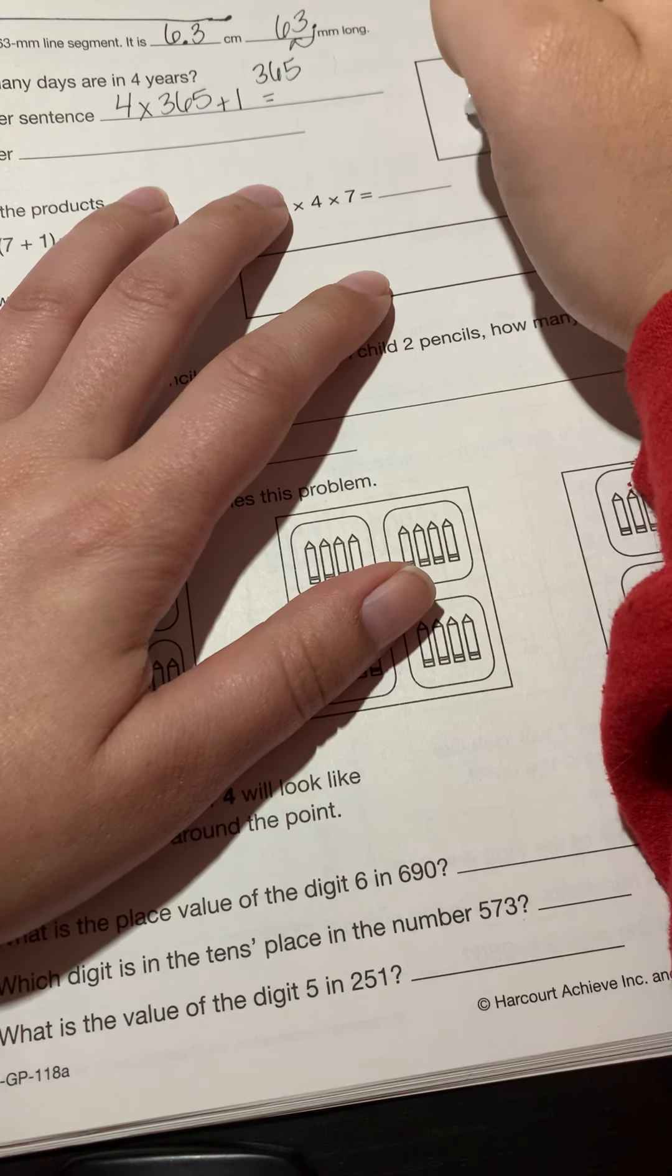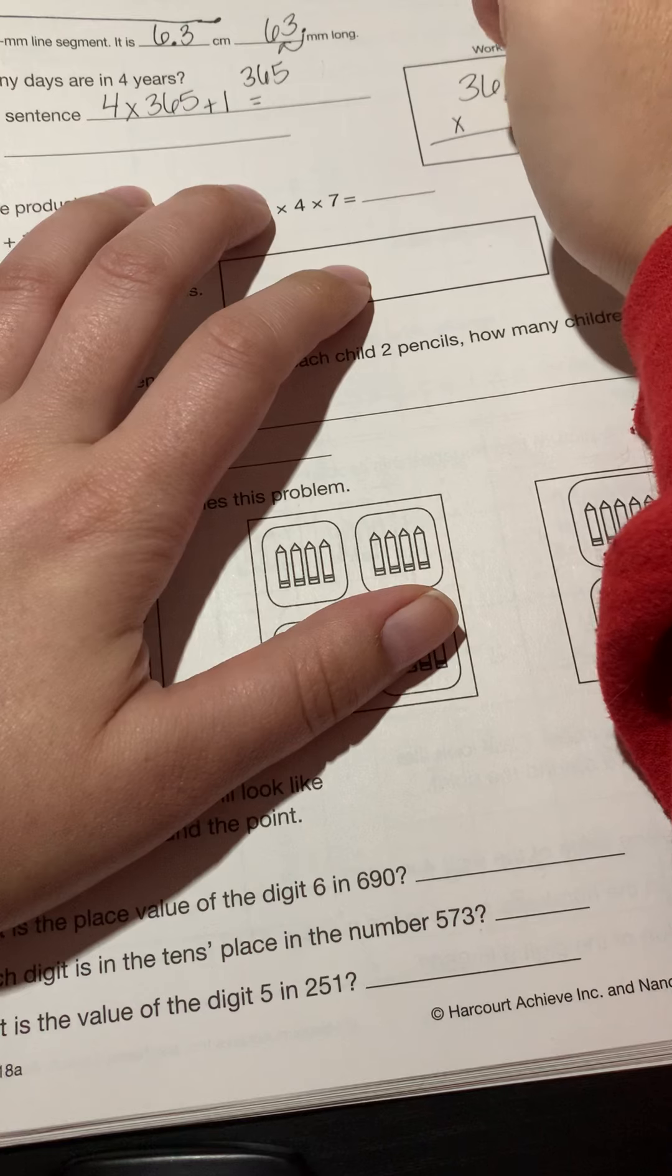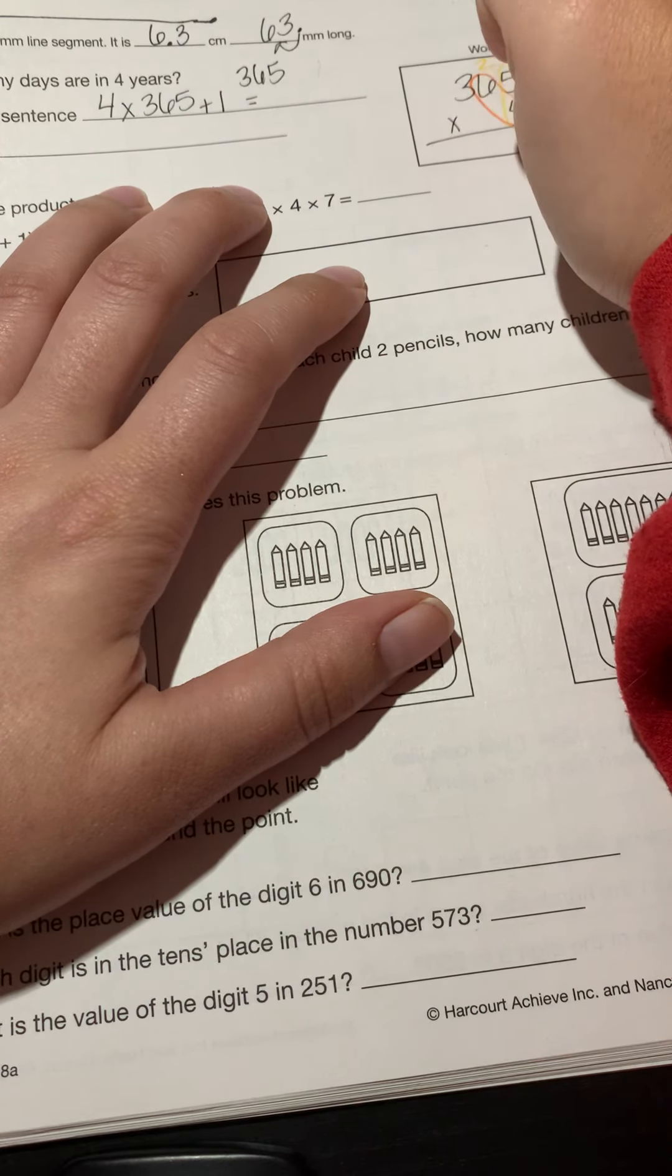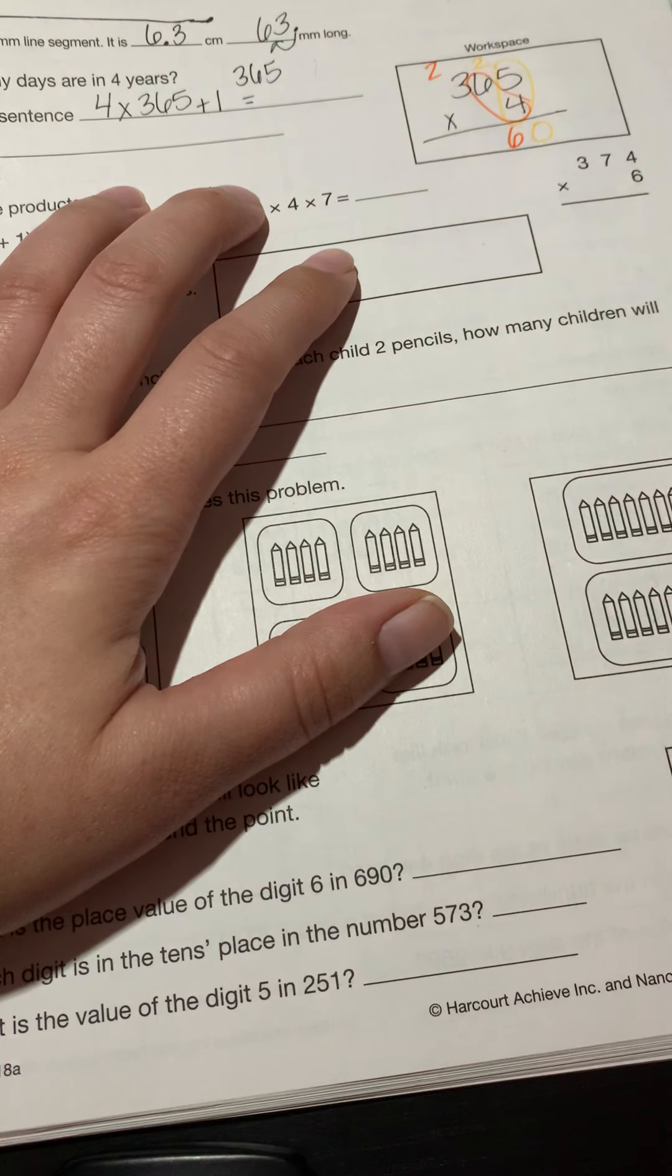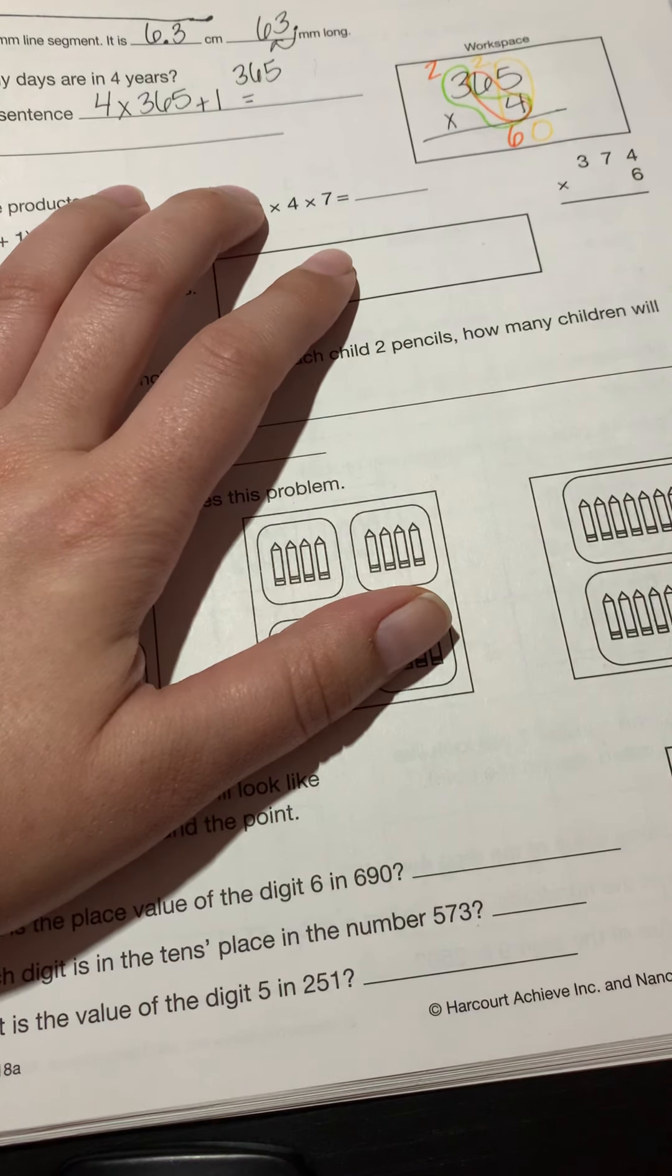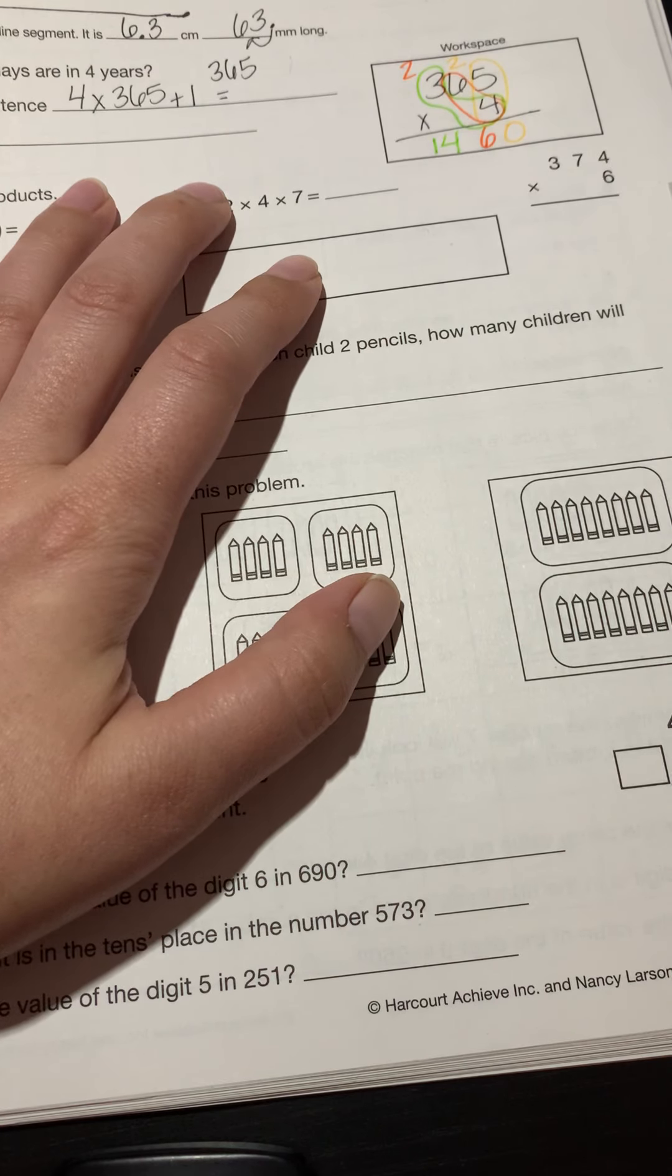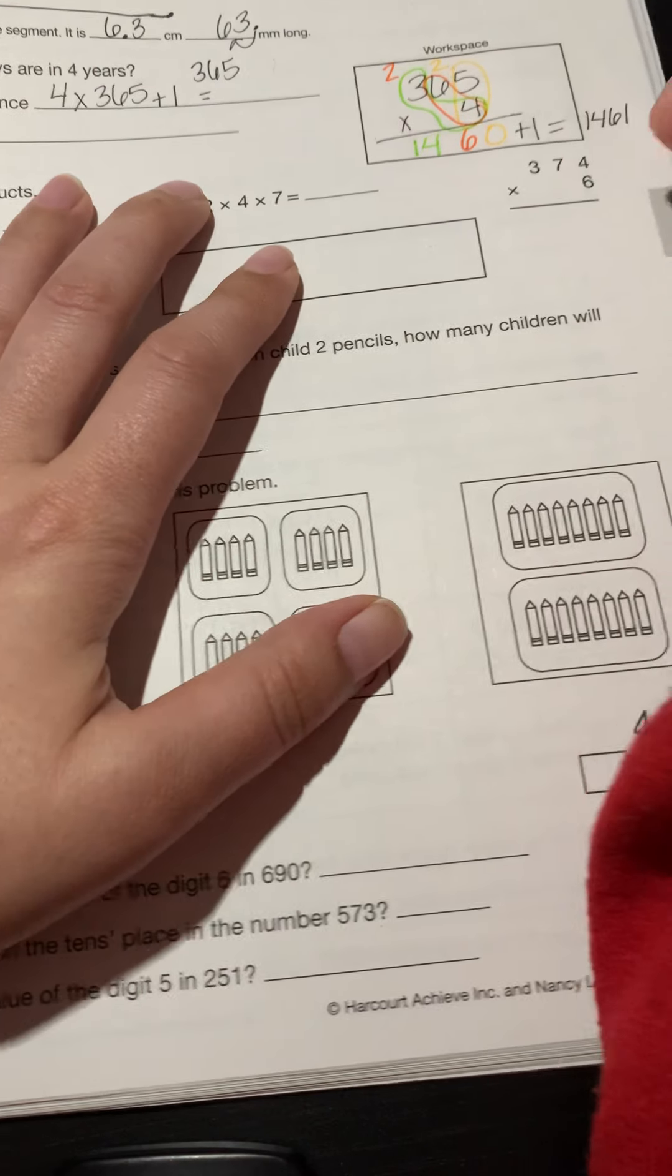So let's go ahead and use our workspace for this. So we have 365 times four. I'm going to go ahead and use my colored pens for this. So what's four times five, 20, drop my zero, carry my two. And then how about four times six? 24 plus two, 26. I'm going to drop my six, carry my two. And then lastly here, I have four times three, which is 12 plus two more gives me 14. So I've got 1460. And then I need to do what? Am I done here? No, I need to add one, which equals 1461 as my answer.